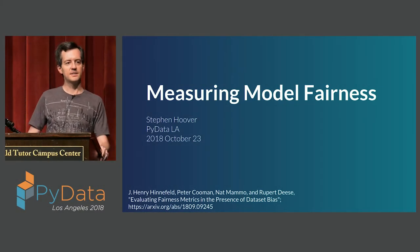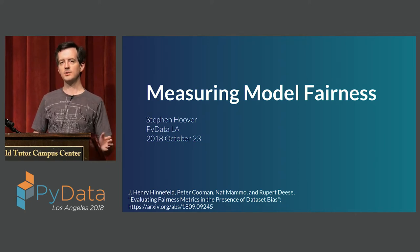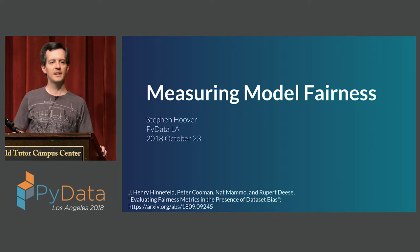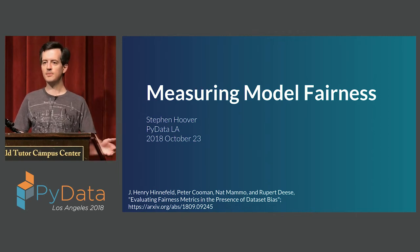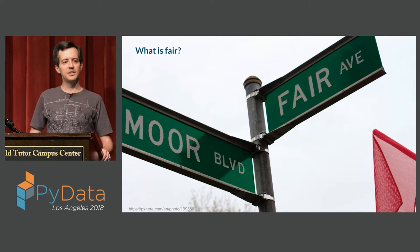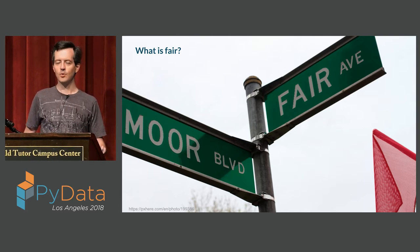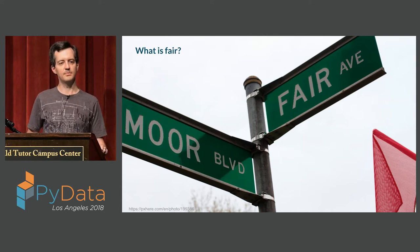The talk I'm giving today is largely based on a paper that four of my colleagues wrote recently, in which we looked at how causal bias in your data can affect the fairness of the models that you make. Before I get to the experiment, I'd like to start with a question. The first question, even before what is fair, is: why do we care that our models are fair?